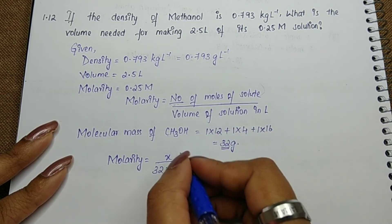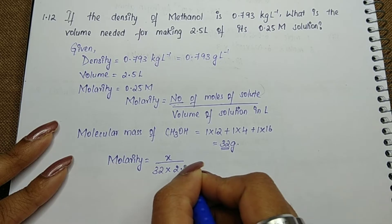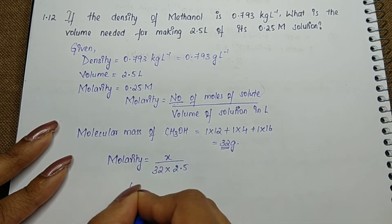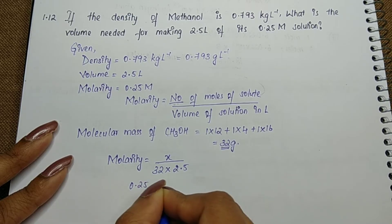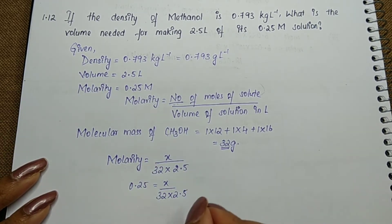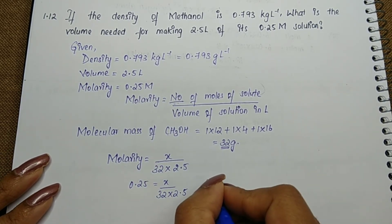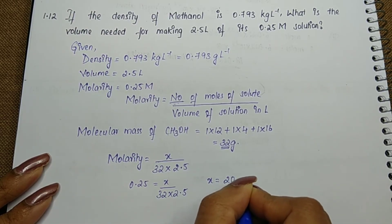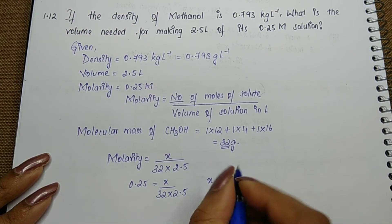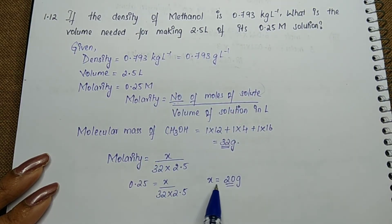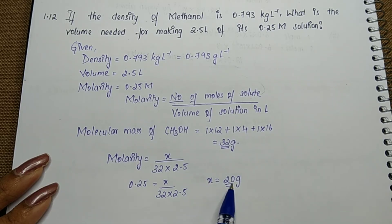Volume of solution in liters is 2.5 liter. Molarity is 0.25, so 0.25 equals x divided by 32 times 2.5. When we solve for x, we get 20 grams for 2.5 ml. Our given mass is 20 grams.